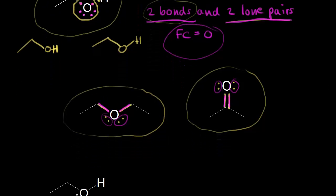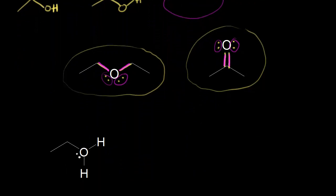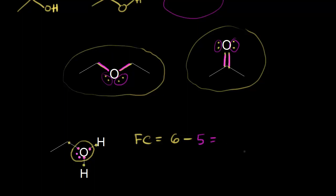Let's move on to another formal charge situation for oxygen. We start by drawing in the electrons in our bonds — each bond consists of two electrons. The formal charge is equal to six minus the number of valence electrons oxygen actually has in our drawing. Oxygen gets one electron from each of the three bonds, so we have one, two, three, four, and five electrons around oxygen. Six minus five is equal to plus one.